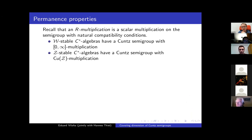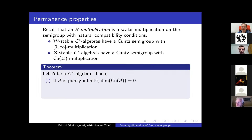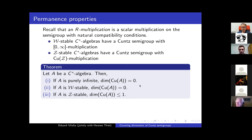Finally, if a C*-algebra has some sort of tensorial absorption — for instance, if it absorbs the Jiang–Su algebra tensorially, or if it is Z-stable — then one can say things about its Küng semi-group via a property known as O_∞-multiplication. Using the fact that Küng semi-groups of W-stable or Z-stable C*-algebras have certain properties, one can say things about their covering dimensions: if A is purely infinite, then dim Cu(A) = 0; if A is W-stable, then dim Cu(A) = 0; and if A is Z-stable, then dim Cu(A) ≤ 1. Note that no simplicity or other assumption is needed here.